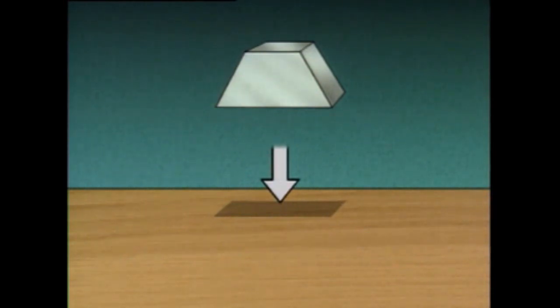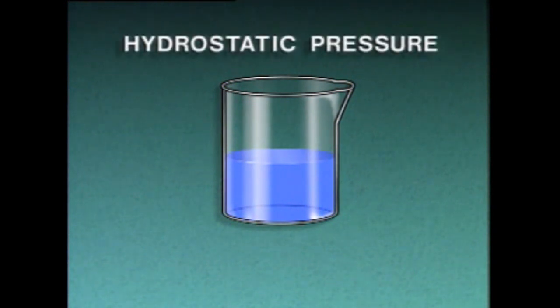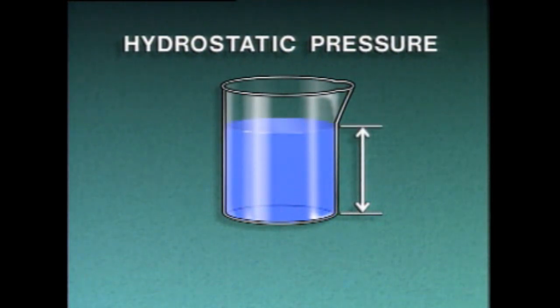Not all pressure measurements deal with solid objects — many deal with liquids. The pressure exerted by a contained liquid is known as hydrostatic pressure and it's determined by the height or depth of the liquid. Hydrostatic pressure increases as the depth of the liquid increases, due to the weight of the liquid pushing down from above. Pressure measurements can also be taken for gases. The pressure exerted by a contained gas is a result of collisions between the molecules of the gas and the walls of the container.